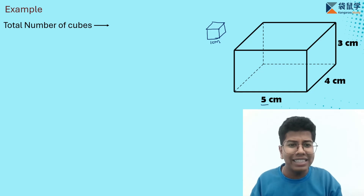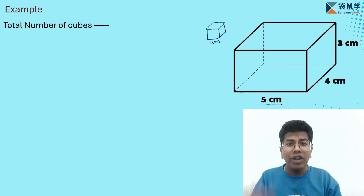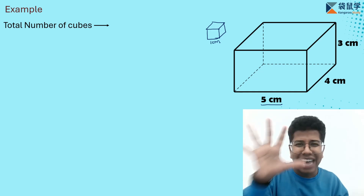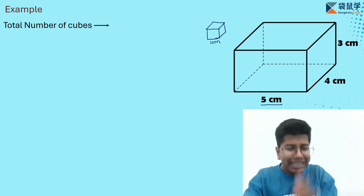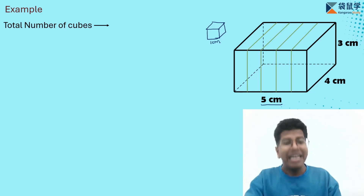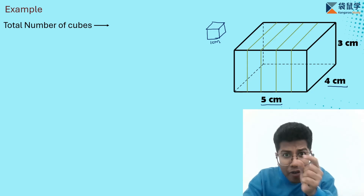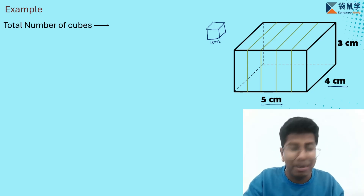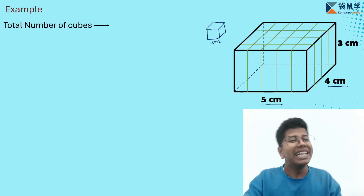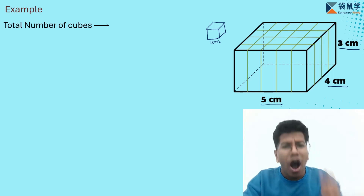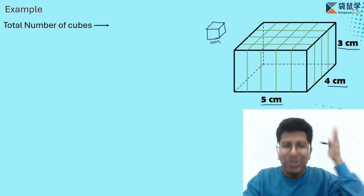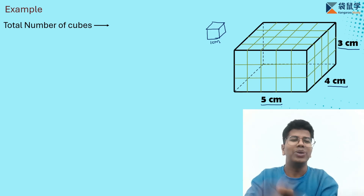On the 5-centimeter length, how many 1-centimeter cubes can I place? Yes, we can place 5 such cubes. If I divide this length into 5 parts, I get this line. On the 4-centimeter width, I need to divide it into 4 parts. Then on the height of 3 centimeters, I can place just 3 cubes, so I can divide the entire thing into 3 parts.